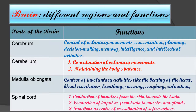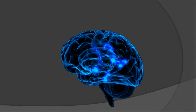The functions of the spinal cord are: first, conduction of impulses from the skin towards the brain; second, conduction of impulses from the brain to muscles and glands; and third, it functions as the center of coordination of reflex actions. That's it for today — I hope you all have understood, and we will cover the next type of nervous system in our next video. Thank you.